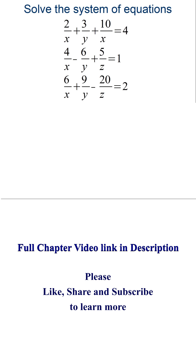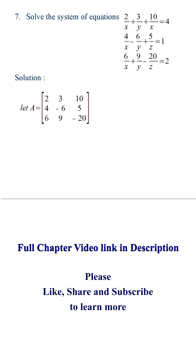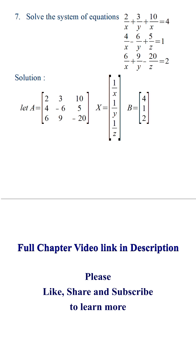Solve the system of equations. First we'll represent the system of equations in matrix form, where A is a matrix having all the coefficients, X is the matrix for all the variables. Here we have considered 1 upon X, 1 upon Y, and 1 upon Z as variables, and let B be the matrix for the right-hand side. So our system of equations becomes AX is equal to B.